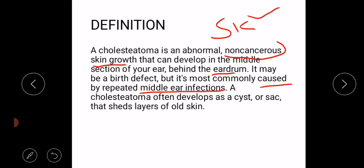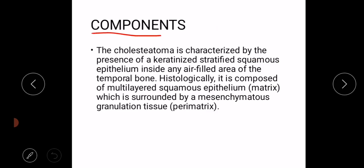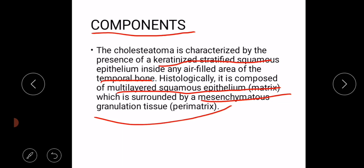In chronic suppurative otitis media, a cholesteatoma often develops as a cyst that sheds layers of old skin. The components of cholesteatoma are keratinized stratified squamous epithelium inside an air-filled area of the temporal bone. It is composed of multi-layered squamous epithelium that forms the matrix, and it is surrounded by a mesenchymatous granulation tissue known as perimatrix. So it consists of a matrix and perimatrix.